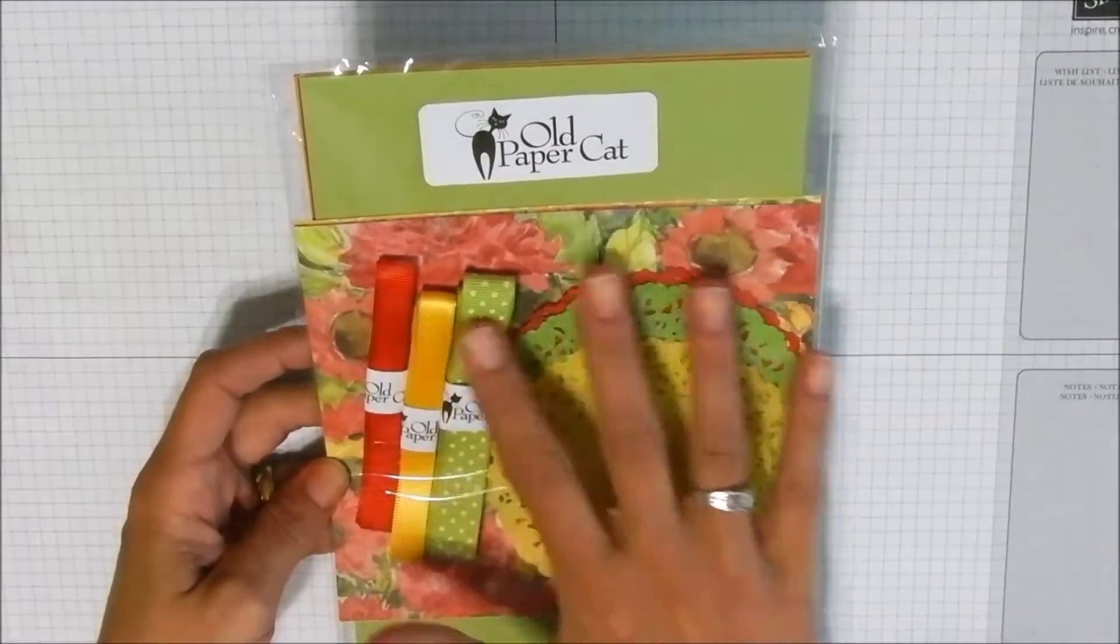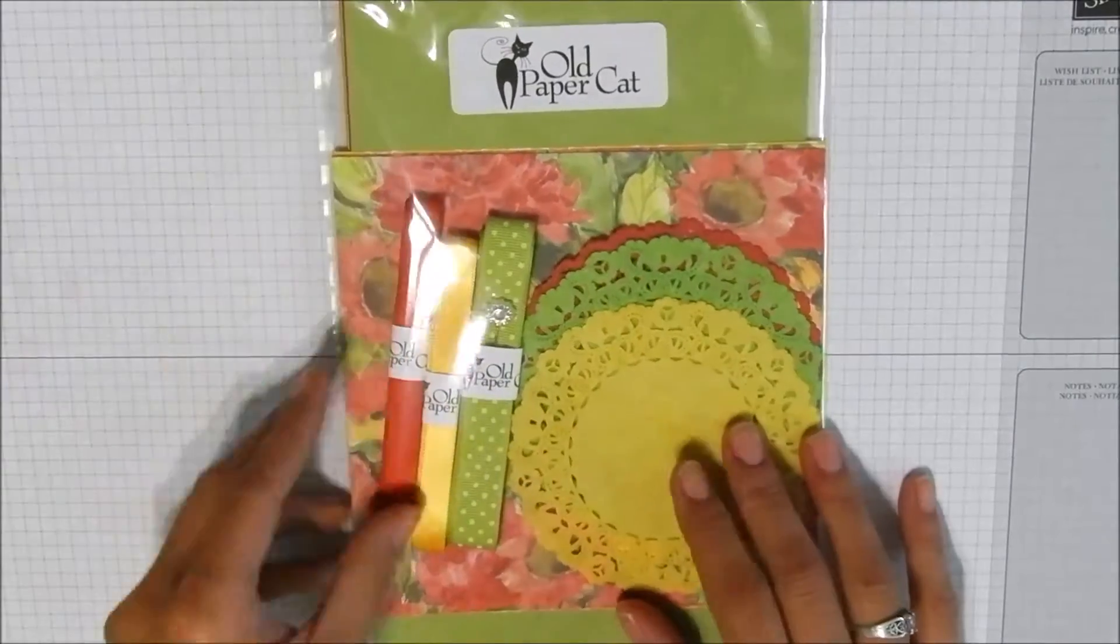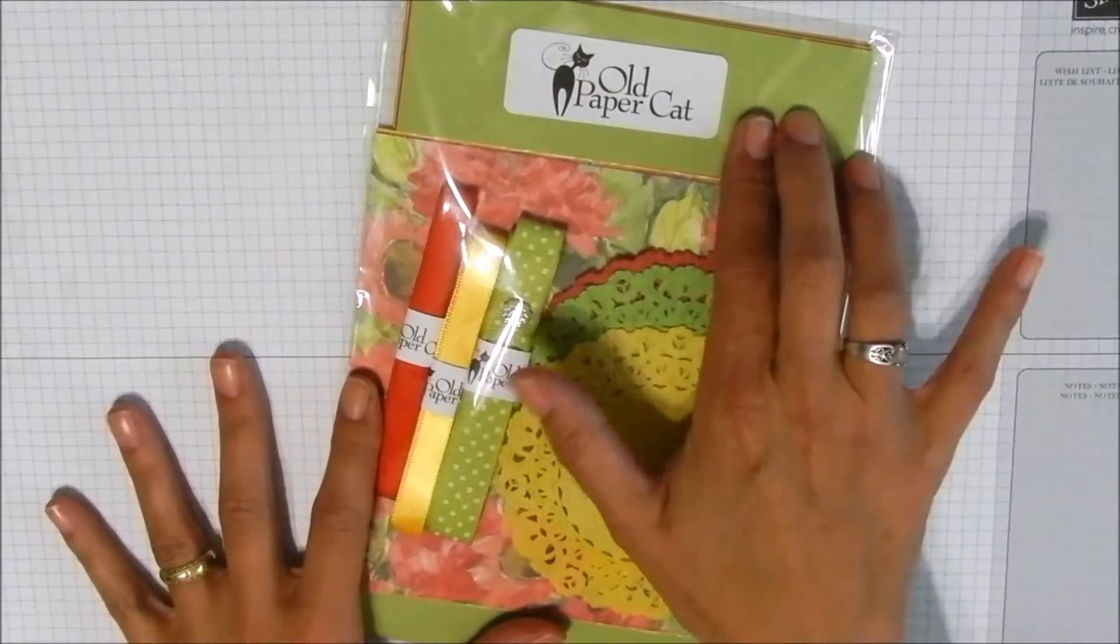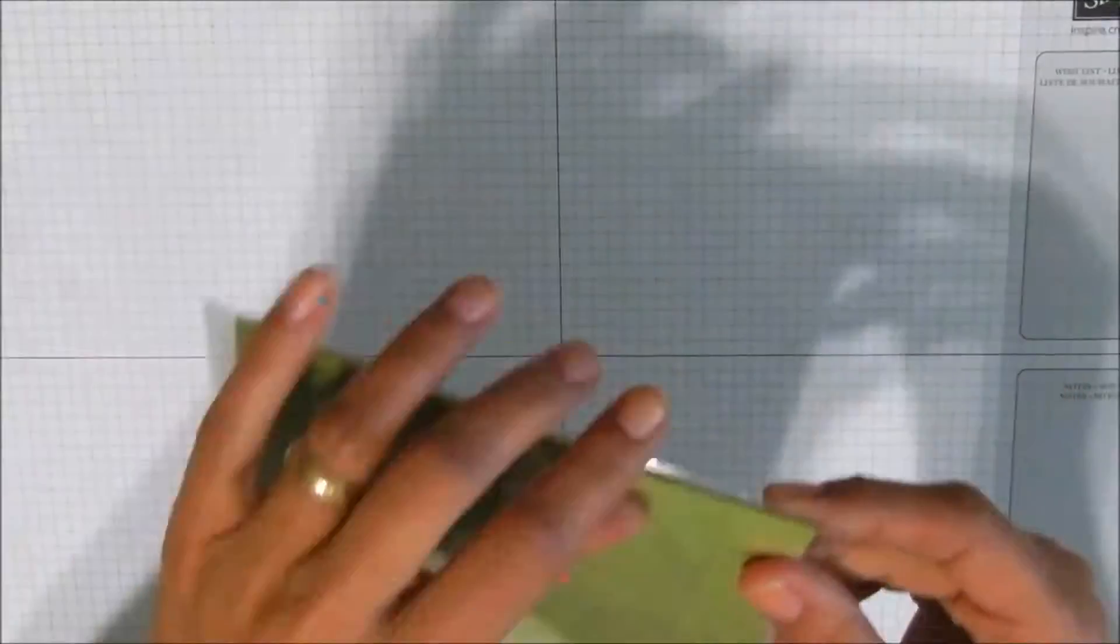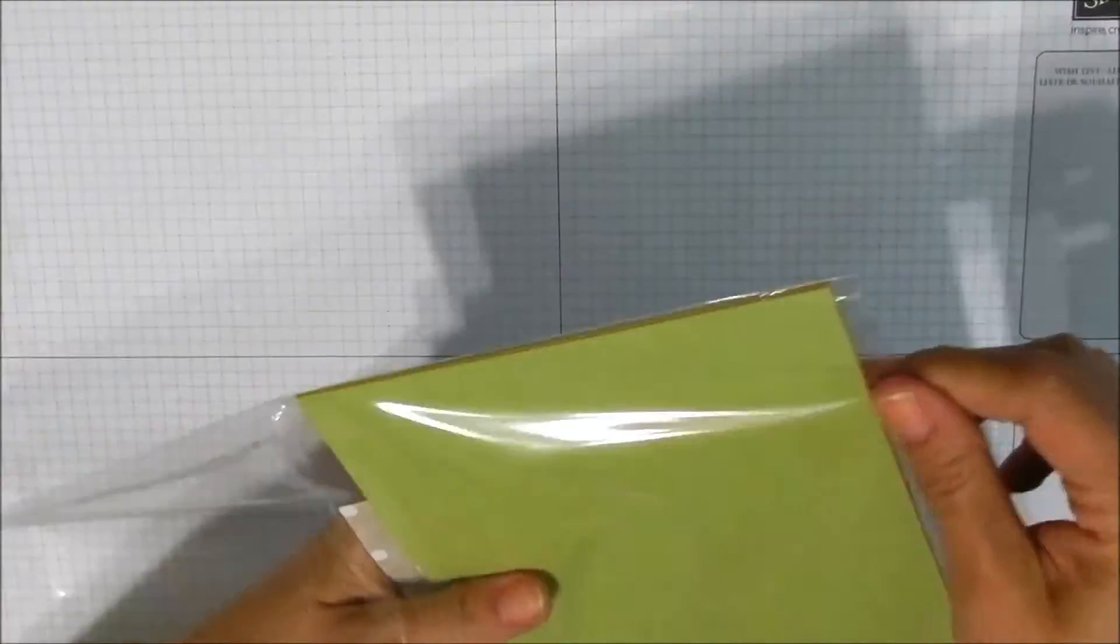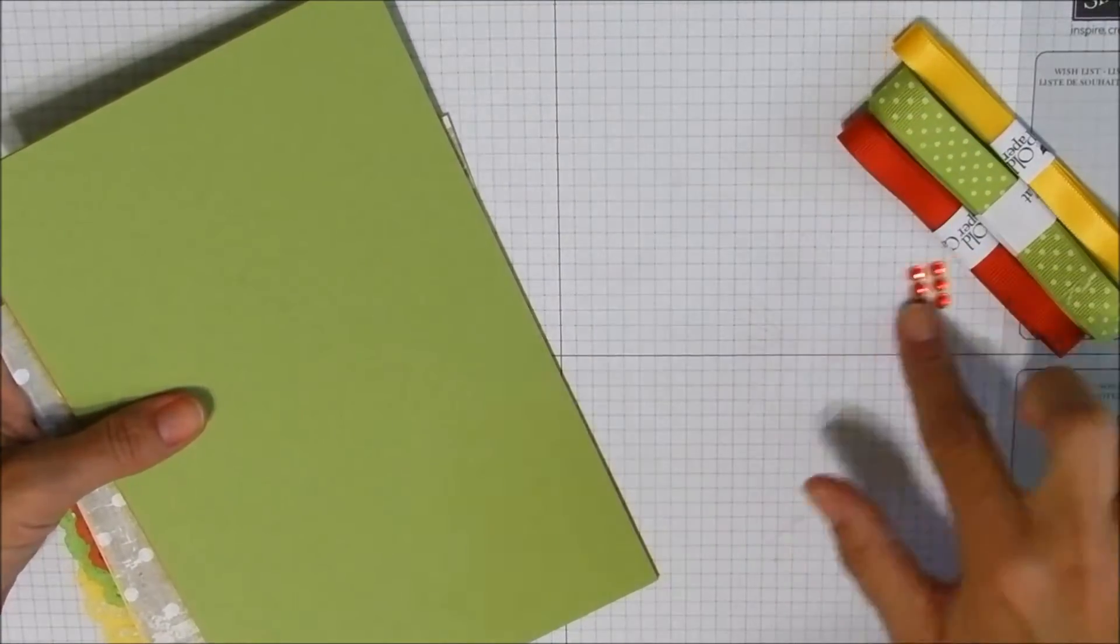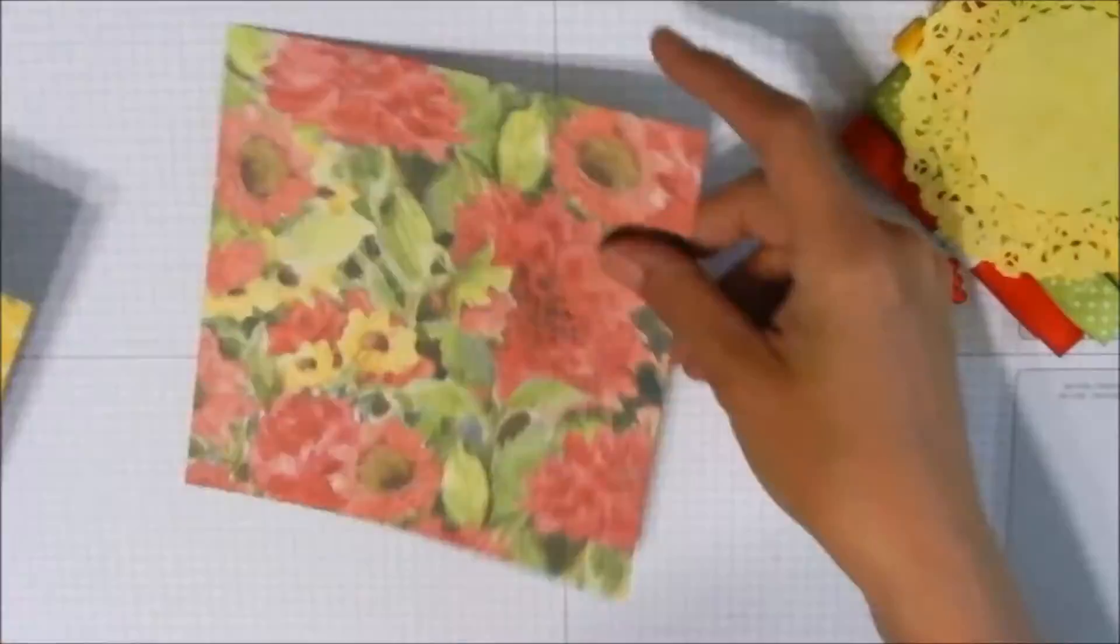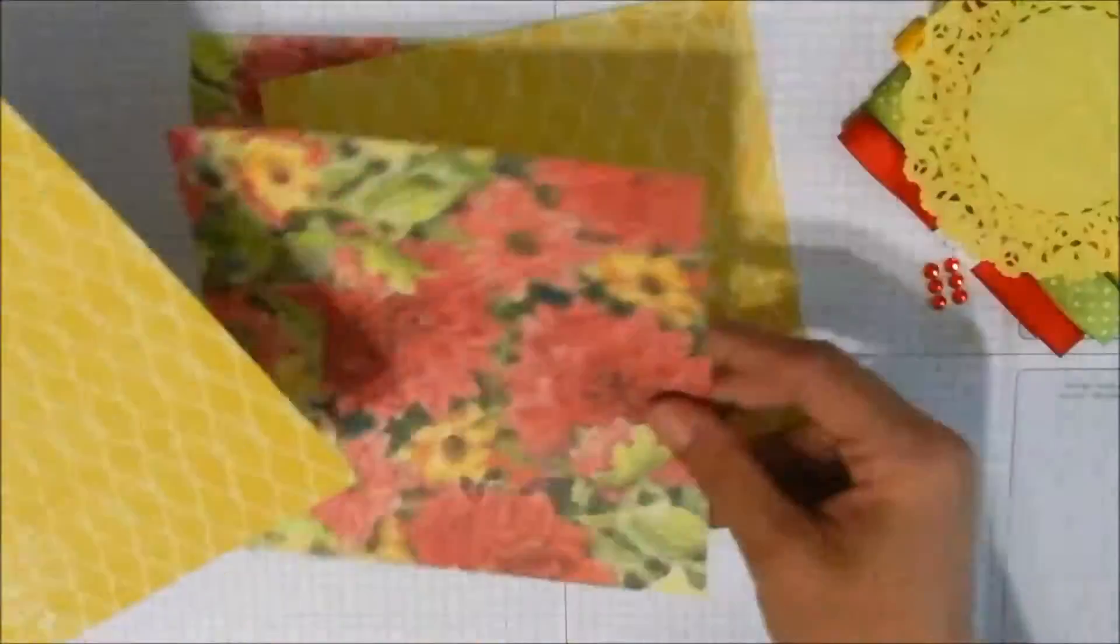The papers we're going to be using today come from a card kit pack from Old Paper Cat. You can find Old Paper Cat on eBay. She puts together these wonderfully coordinated sets of cardstock which is usually from Stampin' Up, patterned papers, ribbons, this one includes little red gemstones and some hand-dyed doilies.